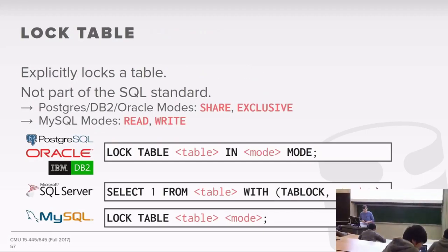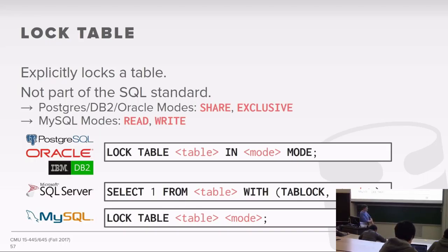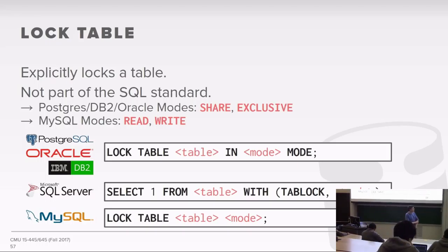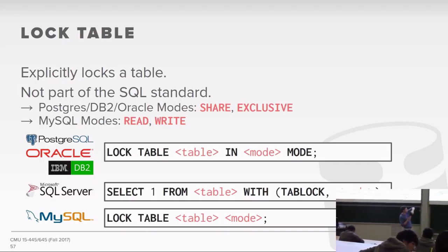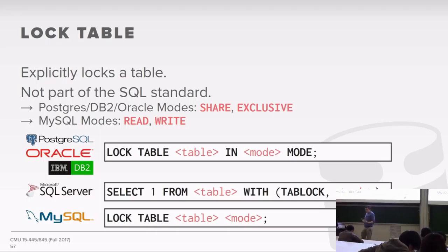The key point is that as an application programmer using two-phase locking, you actually don't know about it—you're not going to call a lock explicitly; the database system does it for you. This is why most systems that implement 2PL do strict two-phase locking, because through SQL there's typically no way to say 'I want to release this lock.' Locks are just released all at once when you commit.